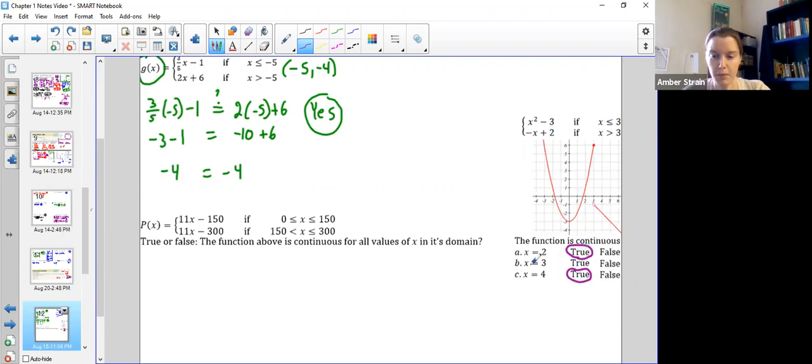Always true. A and C, always true. B is the only one I'm not sure. And sure enough, looking at the graph here, there's a gap. It is not continuous. Let's double check that with the values by plugging in the three into the top and the bottom. And you can see that they do not come out equal. This would be nine minus three is six. This one would be negative one, not equal. That's why it was false.